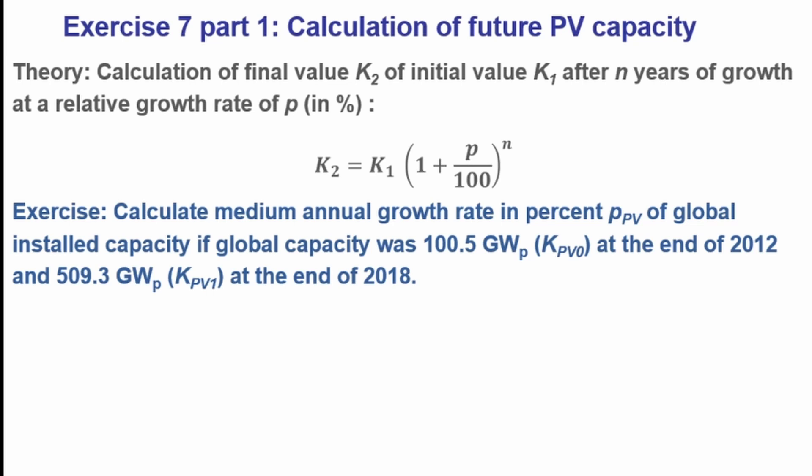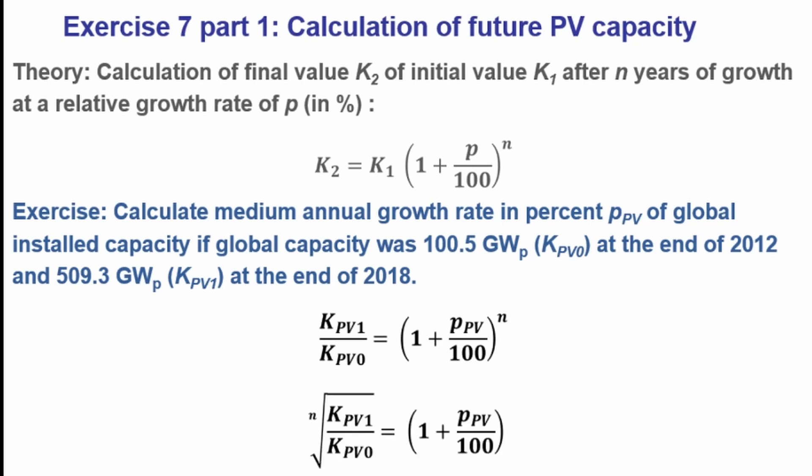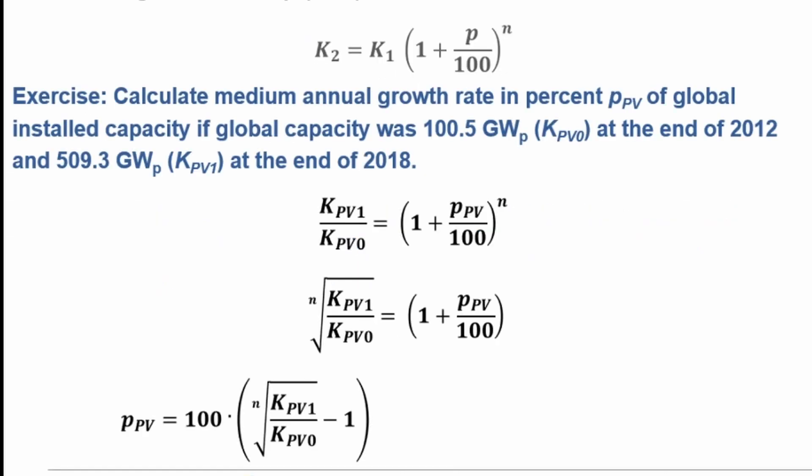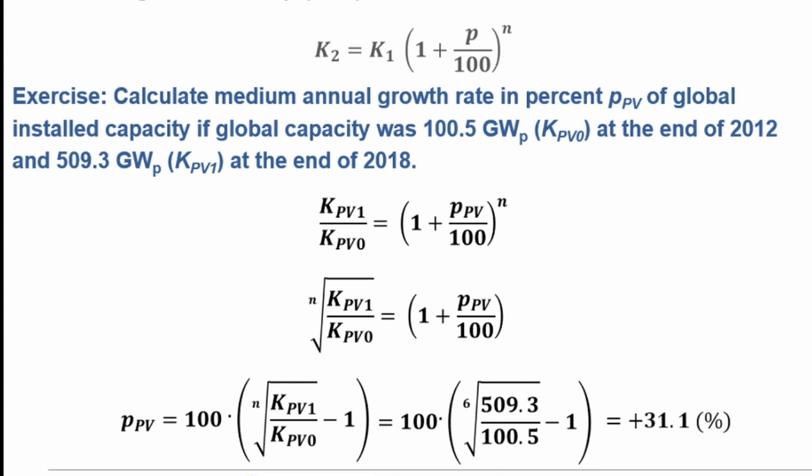So how do we apply that? We use the formula and want to know the growth rate PPV: it equals 100 times the Nth root of KPV divided by KPV0, minus one, giving PPV in percent. Between 2012 and 2018 is six years, so N equals 6. KPV1 is 509.3 GW and KPV0 is 105 GW. We can eliminate the gigawatts, and the result is 31.1% or in decimal 0.311.